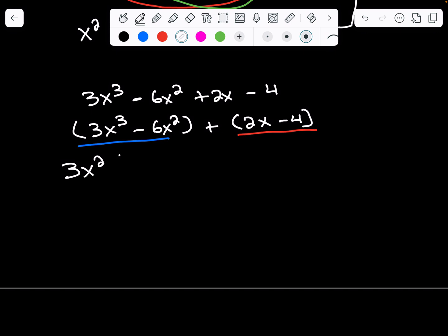We're left with 3x². Now we're going to take each term in our pair and divide them out. 3x³ divided by 3x² is just going to be x minus 2. 6x² divided by 3x² is 2. Now we're also going to take our greatest common factor out here, which is 2. 2x divided by 2 is just x, and -4 divided by 2 is -2.